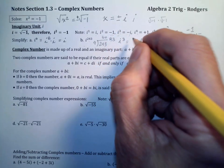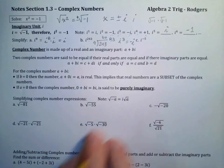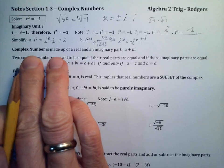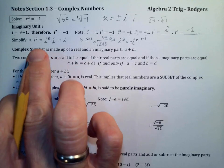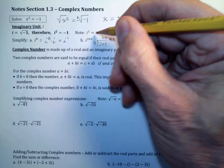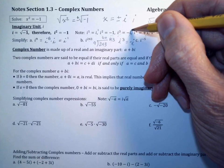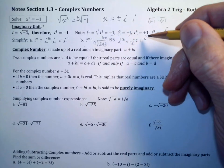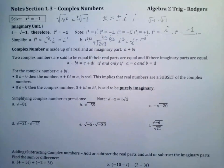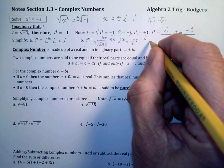When we simplify complex numbers raised to powers, we don't leave anything in a power other than one. The four possible simplified answers are: i (i.e., i¹), -1 (i.e., i²), -i (i.e., i³), and +1 (i.e., i⁴). Everything simplifies to one of those four.